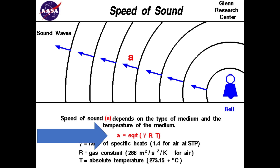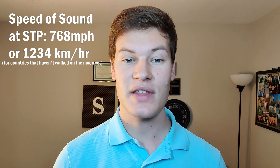There's a speed at which disturbances are transmitted through a fluid. This speed is known as the speed of sound. As we learned in a prior video, sound is just a disturbance in the air. To calculate the speed of sound, we use this equation: the square root of the heat ratio of that fluid times the universal gas constant times the absolute temperature of the fluid. Using this formula, we know the speed of sound at sea level to be approximately 768 miles an hour.